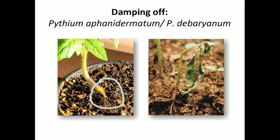First disease is damping off, which is caused by fungi Pythium aphanidermatum or Pythium debaryanum. The disease occurs in two stages: first, pre-emergence, where seedlings are killed just before they reach the soil surface, leading to complete rotting; and second, post-emergence infection.